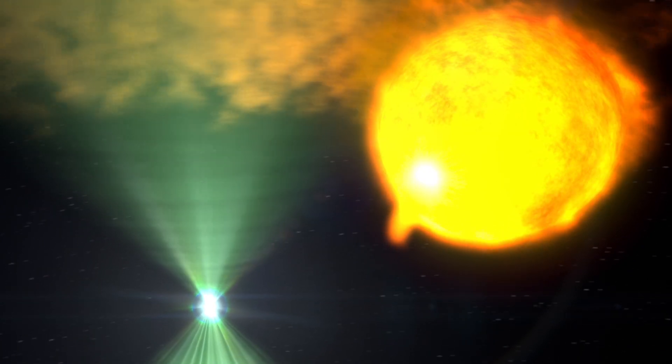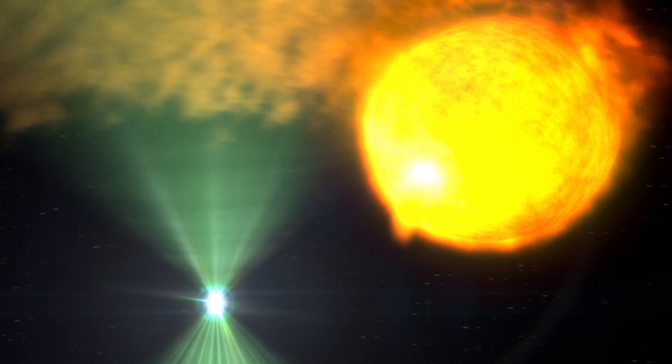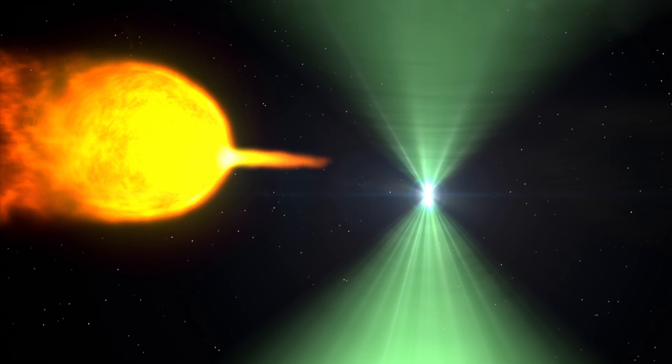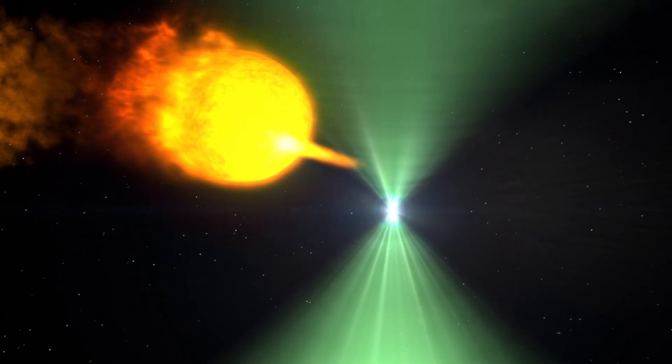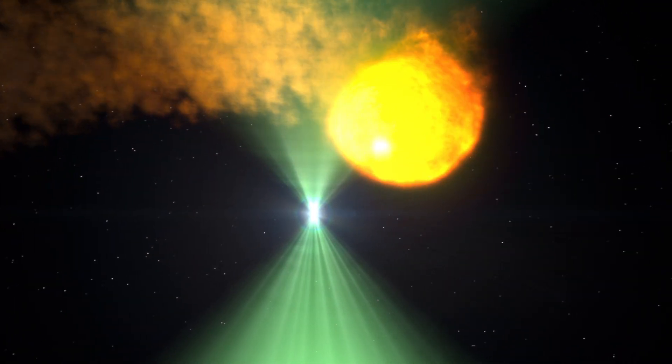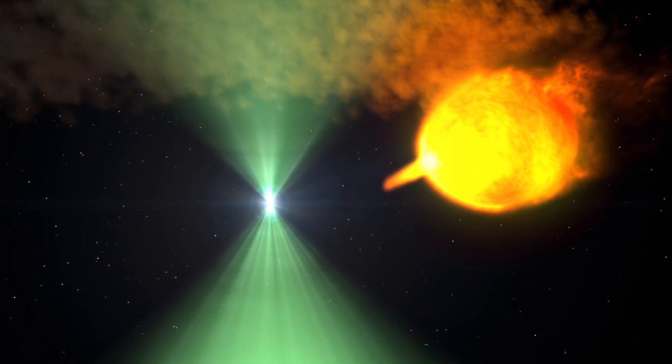But the pulsar produces an outflow of its own. Its spin and magnetic field accelerate charged particles to near the speed of light, creating a high-energy wind. During the radio phase, this pulsar wind easily holds back the gas stream.